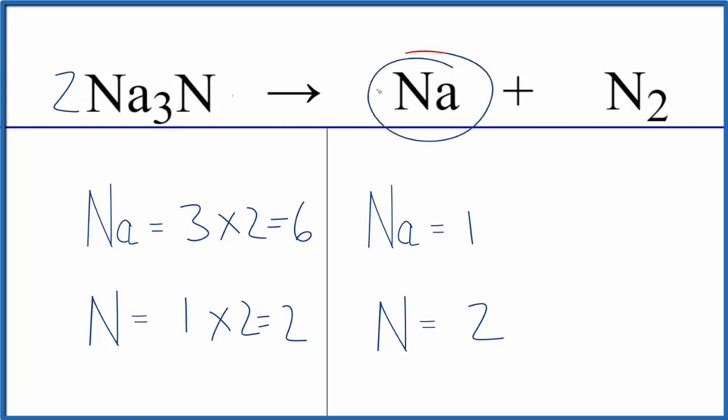Now, since the sodium is all by itself here, if I put a coefficient of 6, 1 times 6, that gives me 6 sodium atoms, and everything's balanced. This equation is now balanced.